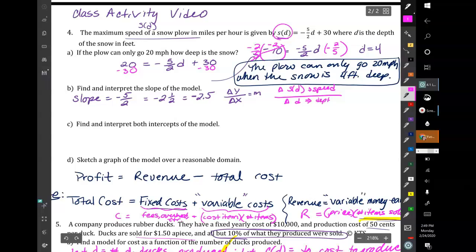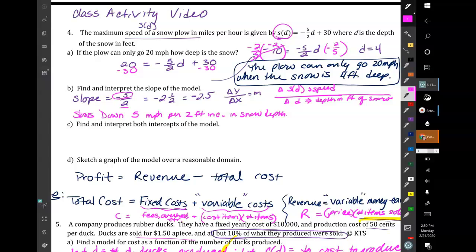Divided by the change in depth, which is D. And that's depth in feet of snow. So this negative 5 over 2 is saying it's going down 5 miles per hour for every 2 feet of snow. It slows down 5 miles per hour per 2 feet increase in snow. But we want to try to get that more as a unit rate, like per foot of snow is easier to think of. And that's where we're going to get that 2.5. We're just dividing out the negative 5 by the 2, and it's still a decrease.